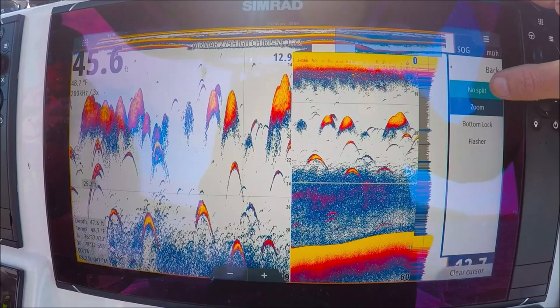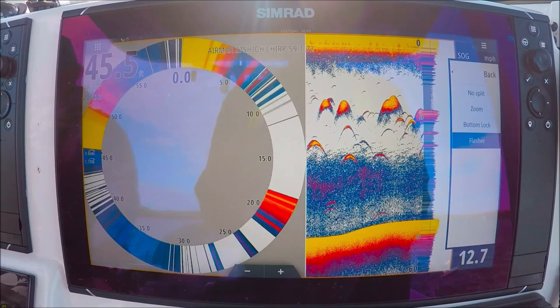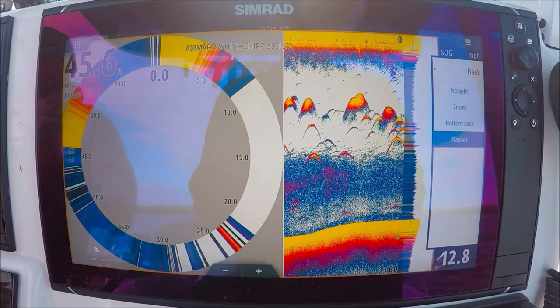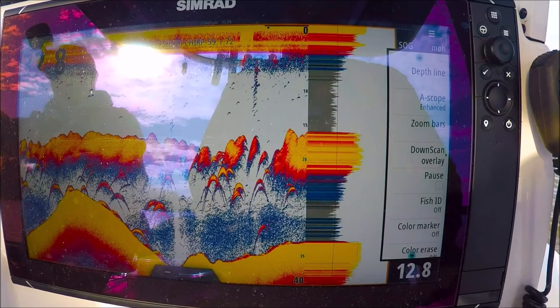Flasher. Classic flasher. Good for running on plane speeds when you're not sure if you're going to run on shallow water or not. It shows you instant returns that are under your transducer right now.